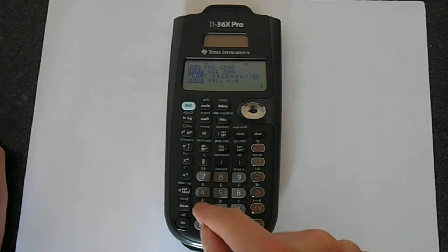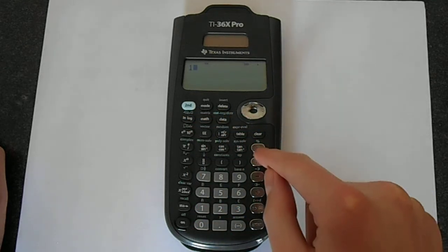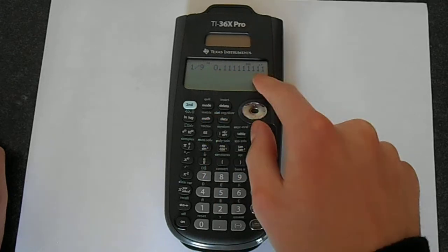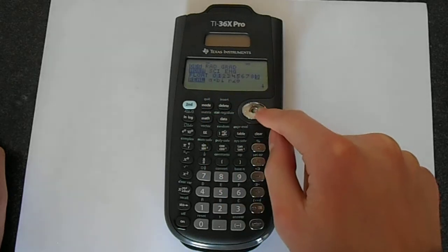and then if you do something like 1 divided by 9, you get all of this answer. But if you put this down to, say,